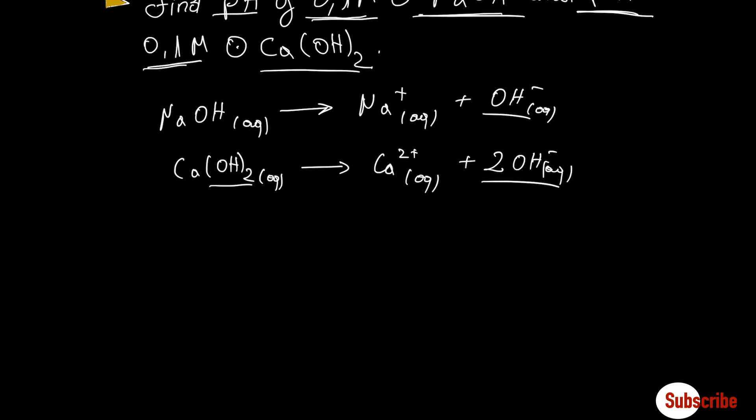In the case of strong bases, you have to consider the stoichiometry. In the first case, we have the concentration of sodium hydroxide, 0.1 molar, which means by stoichiometry, the concentration of OH- is 0.1 molar after the complete dissociation of sodium hydroxide.